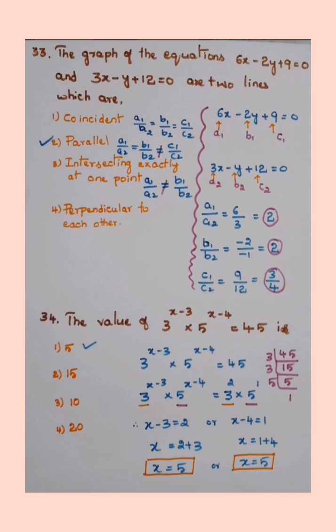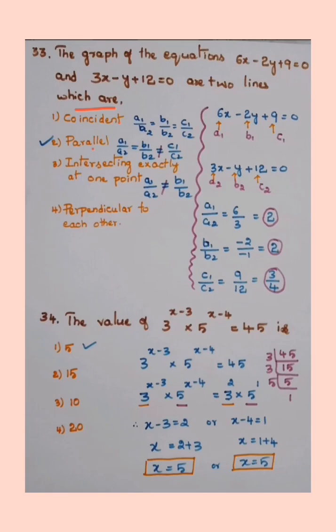We will analyze the paper — we are not only explaining the answers here, we will check the other answers also and why they are so. That will be helpful for further exams. The graph of the equation 6x − 2y + 9 = 0 and 3x − 5y + 12 = 0 are two lines which are — and the options given are whether they are coincident, parallel, intersecting exactly at one point, or perpendicular to each other.